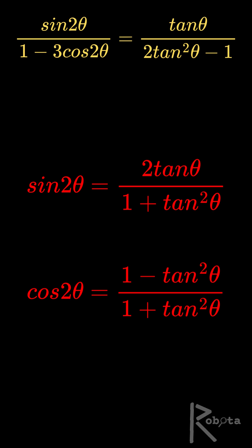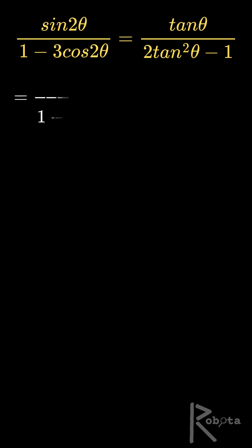Now, plug these into the left side. The numerator becomes 2 tan theta over 1 plus tan squared theta, 1 minus 3 times the fraction, 1 minus tan squared theta over 1 plus tan squared theta.